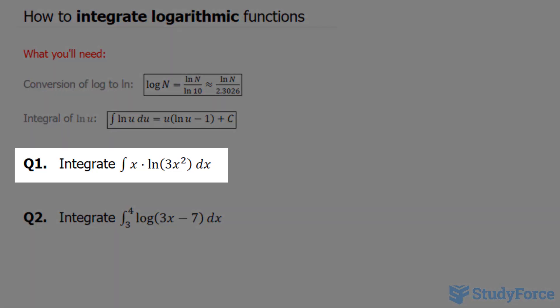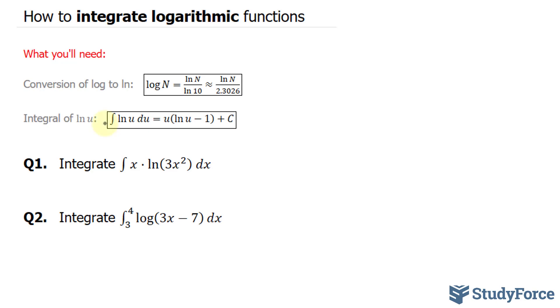Integrate the function x times ln 3x to the power of 2 dx. To integrate this problem, I'll need to use the following rule, where if I have the integral of ln u du, the integral is u times ln u minus 1 plus c.